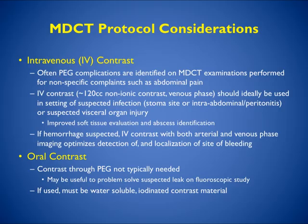In terms of CT protocols, PEG complications are often identified on CT exams in patients presenting with abdominal pain where you're not thinking about PEG complications. IV contrast should ideally be used when infection or visceral organ injury is suspected; a non-IV contrast study works well if you're only checking tube placement. If hemorrhage is suspected, dual-phase imaging with a CT angio protocol is ideal. Oral contrast is typically not needed, but if a leak is suspected, water-soluble contrast material such as OmniPaque in solution works very nicely.